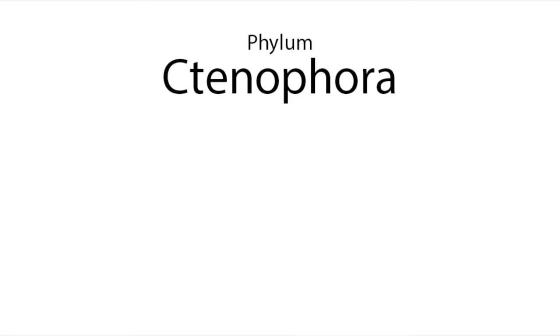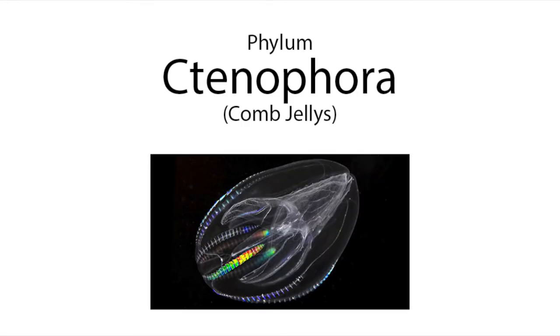The other diploblastic group is the ctenophores. They don't actually glow — the cilia on comb jellies is so tightly packed together that it actually reflects light itself. These guys also spontaneously form an anus when they need to defecate.